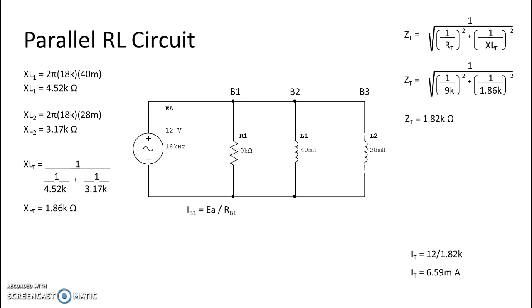Alright, so back to current. Branch one, we take voltage divided by the resistance of branch one. And we get 1.33 milliamps. For branch two, again, voltage divided by inductive reactance. And we get 2.65 milliamps. Finally, branch three, same process. And we get 3.79 milliamps.